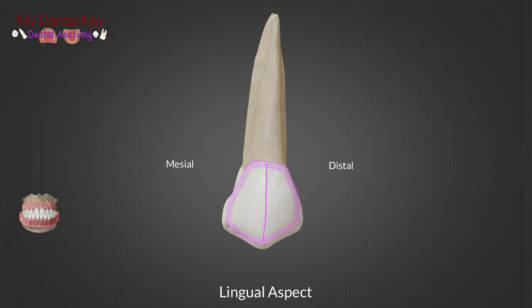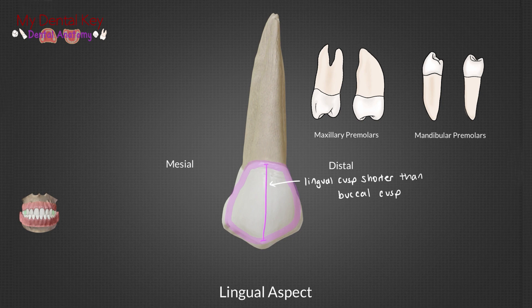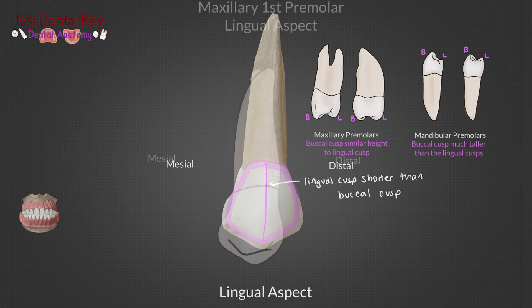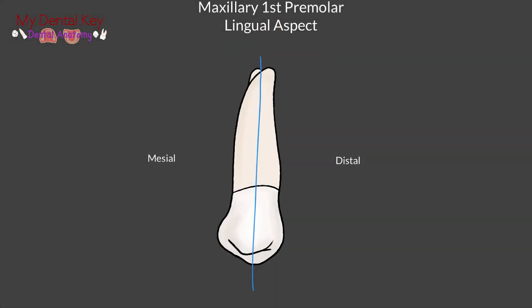Looking at the lingual side, we can see the lingual cusp is shorter than the buccal cusp. However, the maxillary premolar buccal and lingual cusps are more similar in height than the mandibular premolar's buccal and lingual cusps. We can also see that this tooth has a lingual convergence, where the lingual surface is slightly narrower than the buccal surface. The lingual cusp is located mesially to the midline, which is opposite of the buccal cusp, which is located distally to the midline.